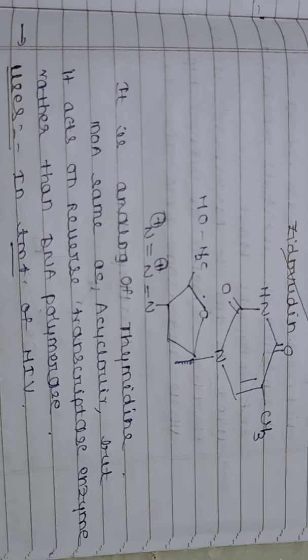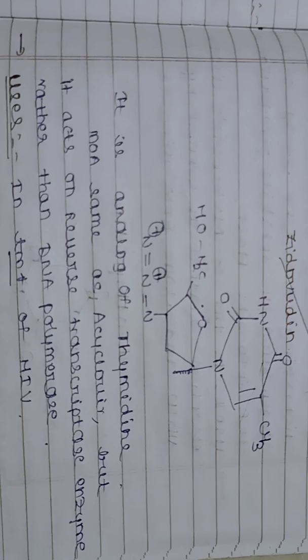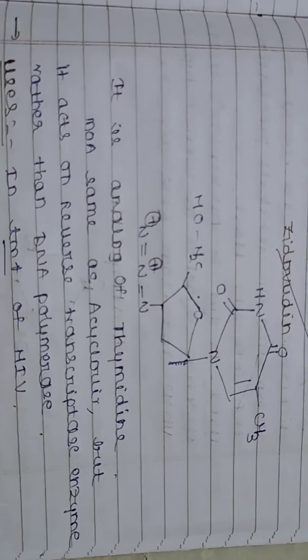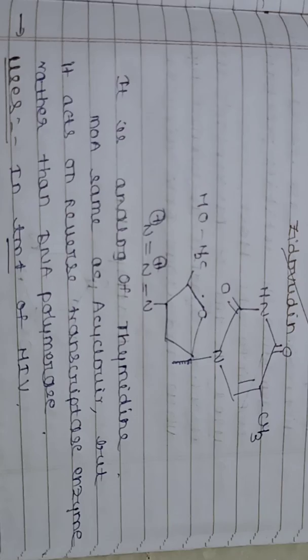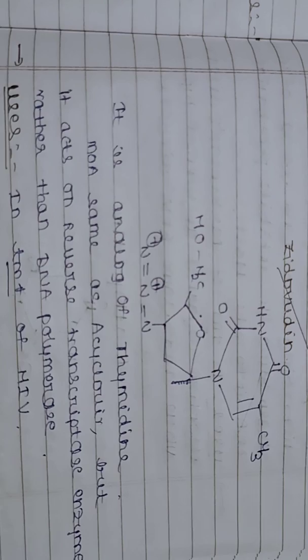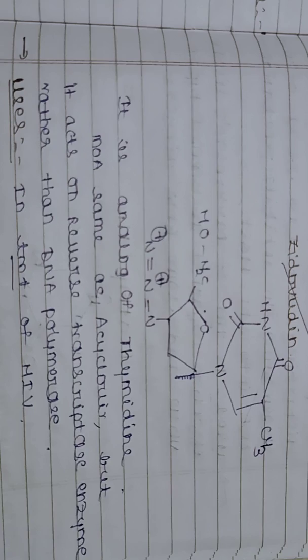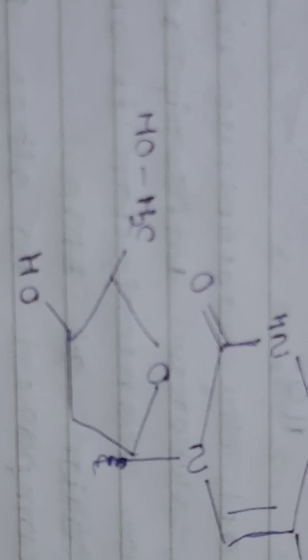Zidovudine: its structure is shown here. It is an analog of thymidine, meaning its main nucleus consists of a thymidine ring. The mechanism of action is the same as acyclovir — it forms zidovudine monophosphate, diphosphate, and triphosphate. However, it acts on the reverse transcriptase enzyme rather than the DNA polymerase enzyme. It is highly used in the treatment of HIV (human immunodeficiency virus) / AIDS infections.